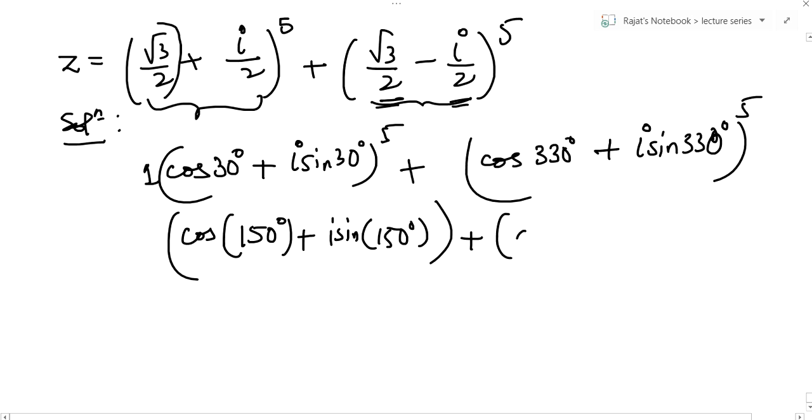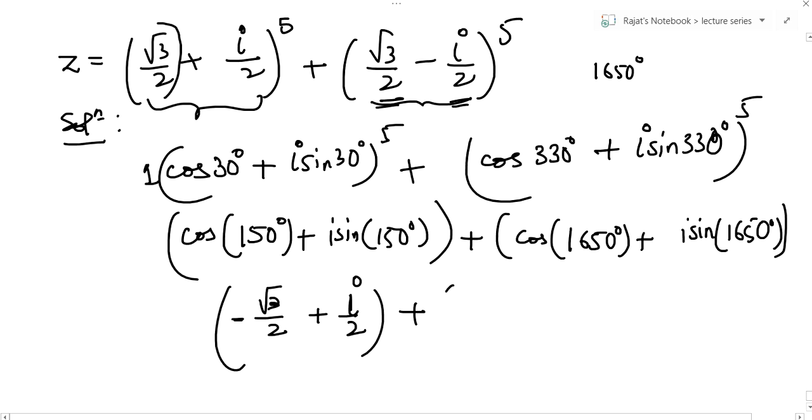Plus this will become cos 330 degree into 5, which is 1650. What next? Cos 150 plus i sin 150 degree. Cos of 150 degree is minus root 3 by 2, and sin of 150 degree is half. So this is the final expression you get by simplification.